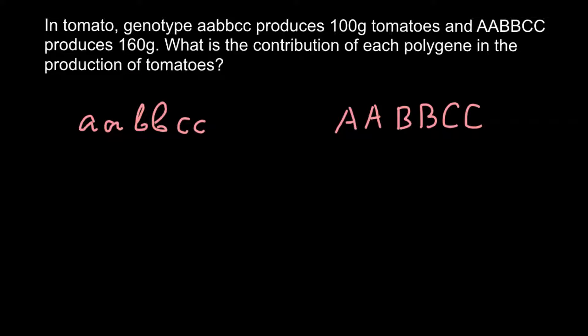I want to change this problem a little bit in order to simplify it so we don't need to use calculators. Let the genotype on the left produce fruits that weigh 120 grams, and this genotype here produce 180-gram fruits. First of all, how many genes do we have here?